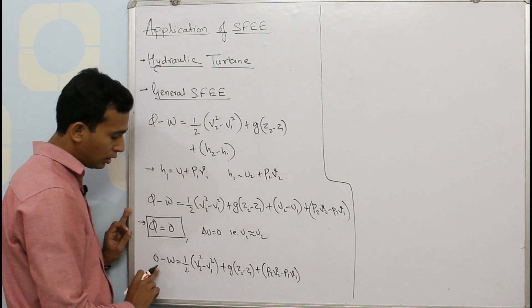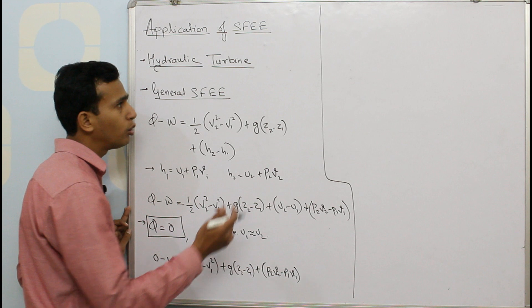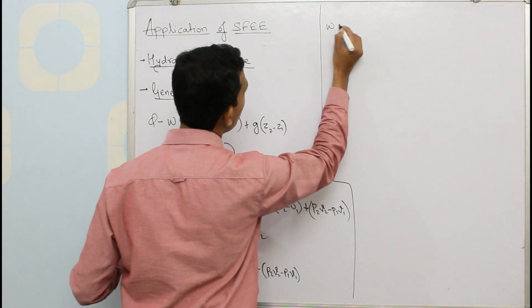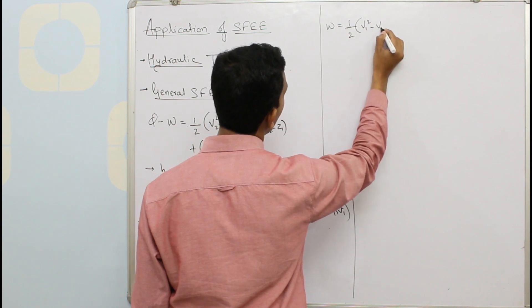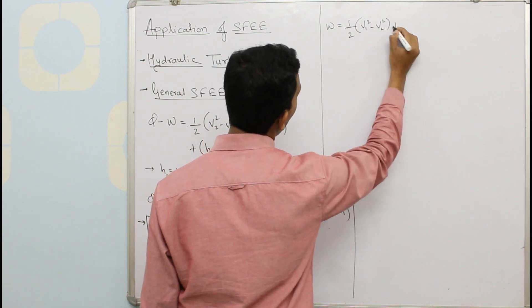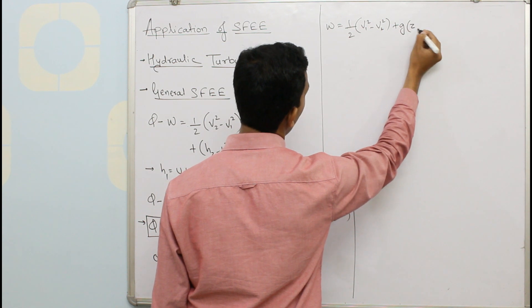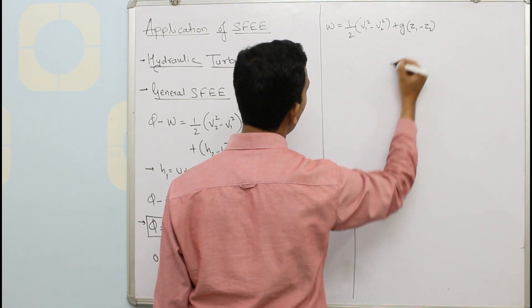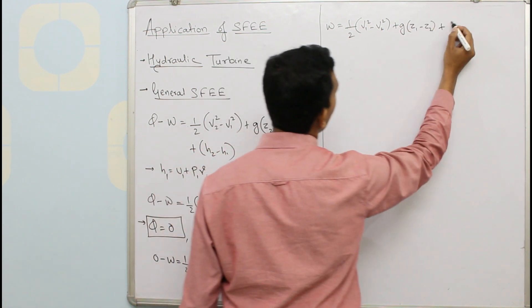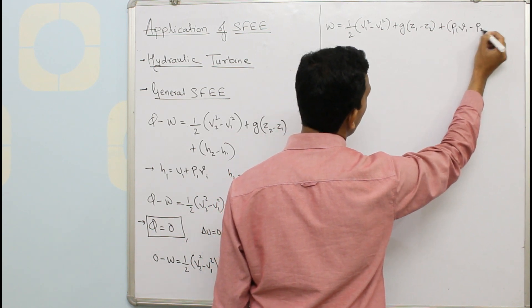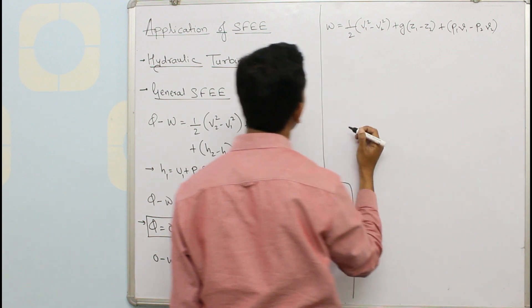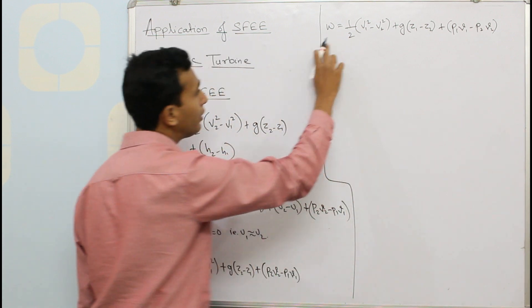Now multiplying by minus 1 on both sides we get W equals half V1 square minus V2 square plus G into bracket Z1 minus Z2 plus in bracket P1V1 minus P2V2.